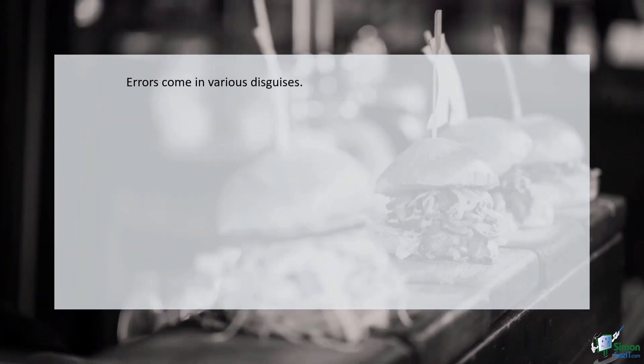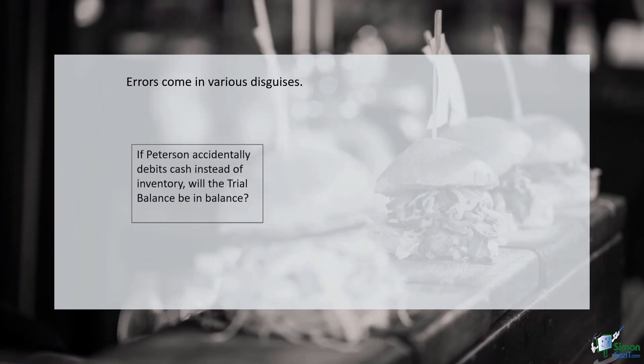But errors come in various disguises. Peterson, retracing his steps, inadvertently reverses a transaction, debiting cash instead of inventory. The trial balance, while mathematically balanced, conceals this entry reversal, highlighting the subtleties of error detection.